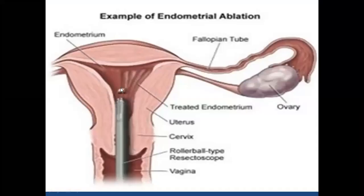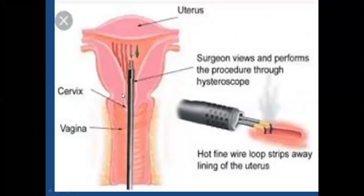The rollerball resectoscope: electrical energy is passed through this rollerball and it is rolled from above downwards to ablate the endometrium. The loop is another instrument through which electrical energy is passed to ablate the endometrium.